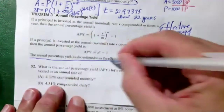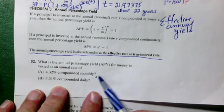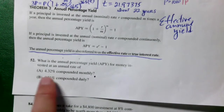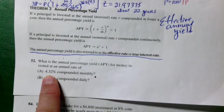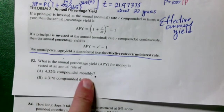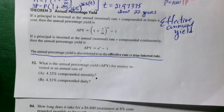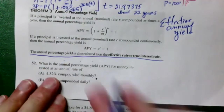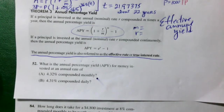The effective annual yield is more meaningful than the nominal rate because the nominal rate isn't quite accurate once compounding is applied. Let's do number 52: compare 4.32% compounded monthly versus 4.31% compounded daily — which actually gives the higher interest rate in one year? The answer is the effective annual yield. In the formula, you only need M and R.